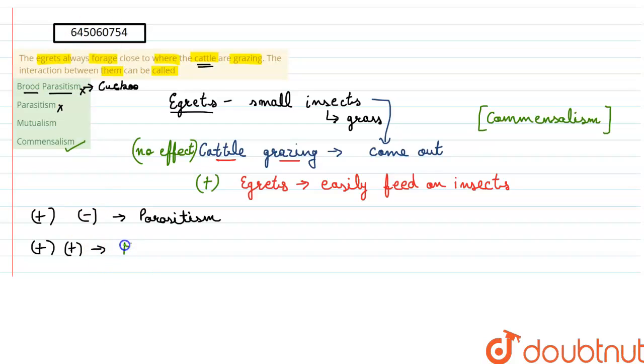So in the above situation which is given in the question, only one is being benefited and there is no effect on the cattle, so this would be commensalism. Therefore, option four is our right answer.